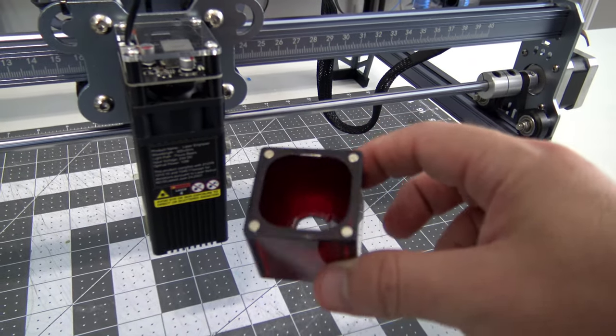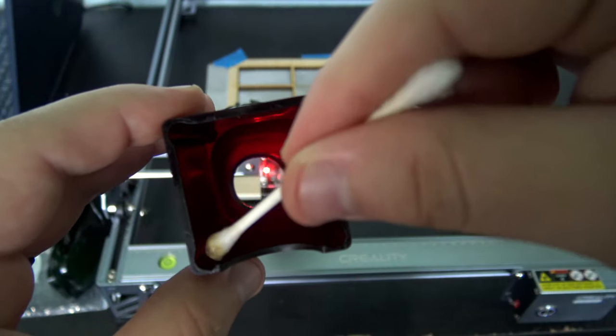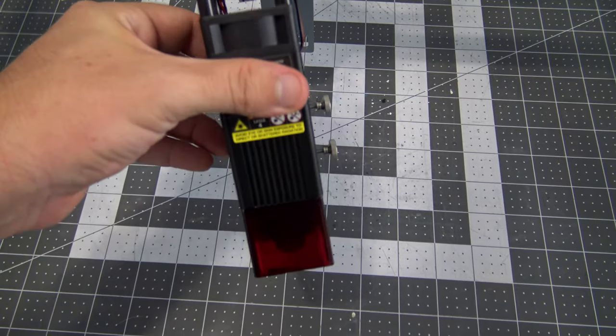The cover is also easy to clean, simply wiped down with isopropyl alcohol. The internal edges are even rounded to allow a cotton swab to easily fit. Then just let the magnets reattach the cover.